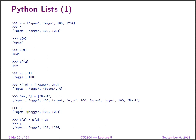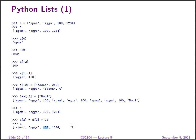Throughout all this process, A has not been changed — so if we evaluate A again, we get the same list. We can change an element of a list on the fly: a[2] can be increased by 23 and we see the result in the list. Lists are mutable objects, unlike Prolog.